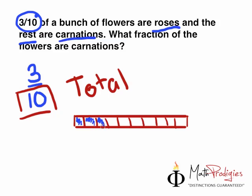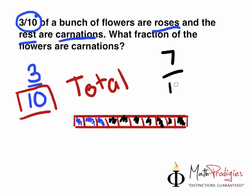Now, the question is: what fraction of the flowers are carnations? You can see 1, 2, 3, 4, 5, 6, 7. So you have 7 parts, and what's the total? 10. And that's the answer.